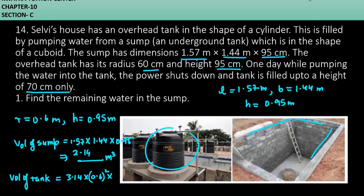So yes, you will use pi r squared h. 3.14, r square is 0.6 square, and then h. Now multiply all these. It is 3.14 into 0.36 into, sorry, h in this case will be 0.70, not 0.95, because it can be filled to 70 centimeter. So it is 0.791 meter cube.